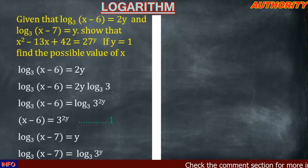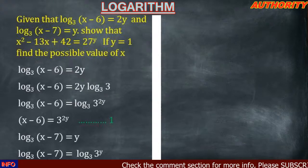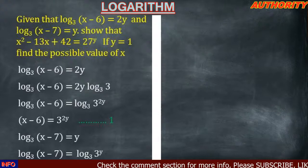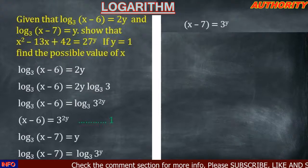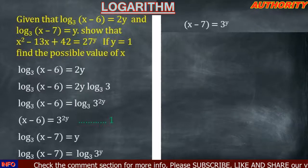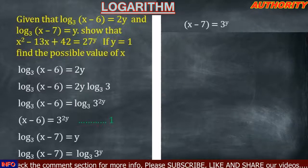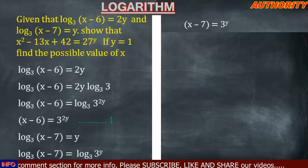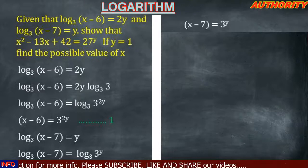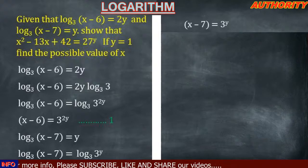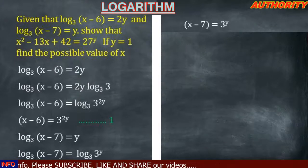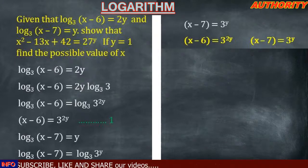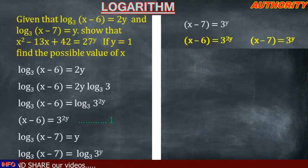Applying the same approach: log(x−7) base 3 equals log(3^y) base 3. Taking away the base, we get x minus 7 equals 3 raised to power y. Call this equation 2. Bringing equations 1 and 2 together: x minus 6 equals 3^(2y) and x minus 7 equals 3^y.